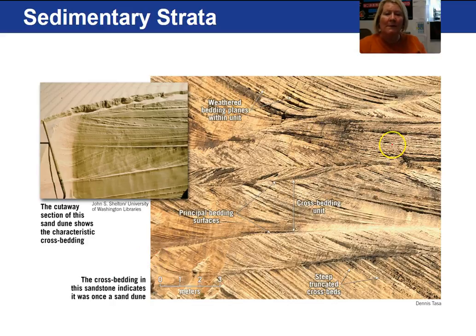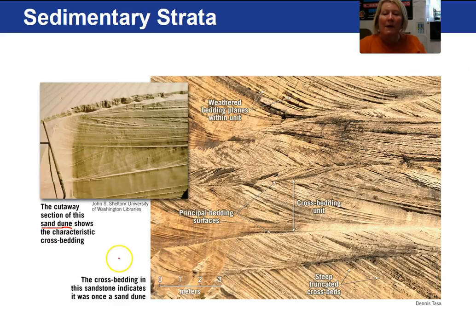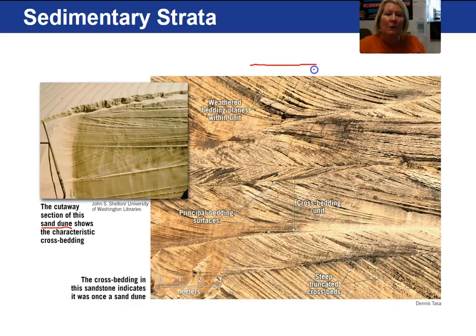These are cross beds — the inclined layers. Cross beds can form in a desert, for example. Here is a sand dune exhibiting cross beds, and we can interpret the direction of the current — in this case, wind would be the current. This top layer here indicates the wind was going in this direction.